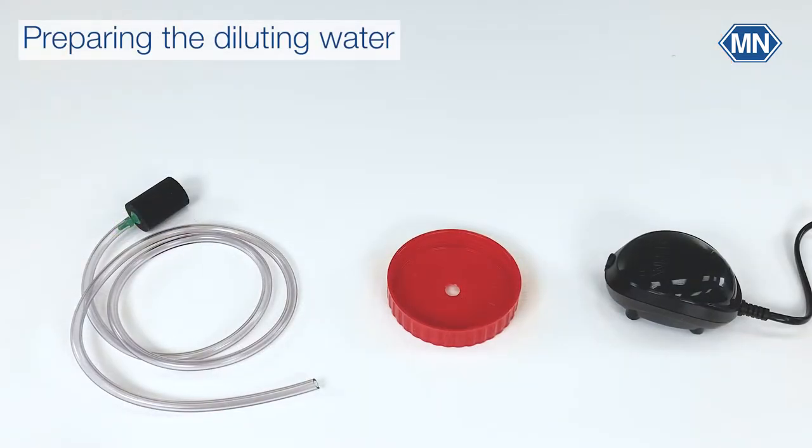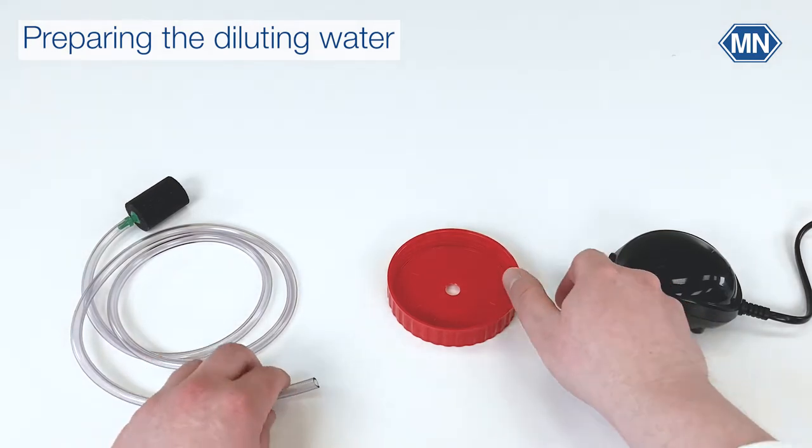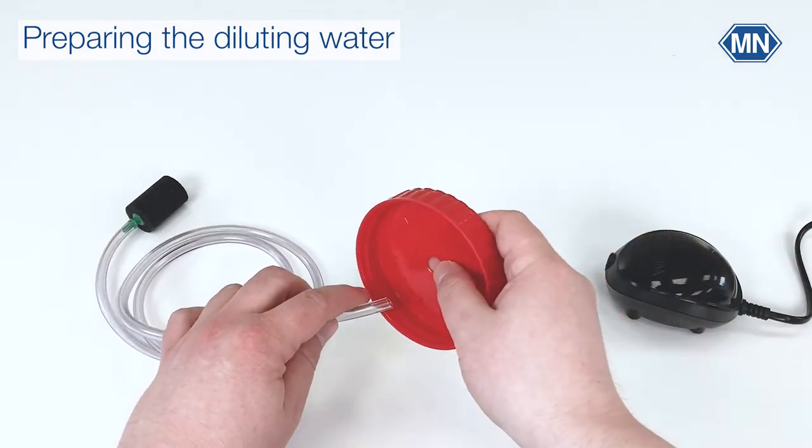Before you can start with the measurements you need to prepare diluting water. For this you need the accessory set. In a first step insert the flexible tube through the borehole of the lid and connect the end to the pump.